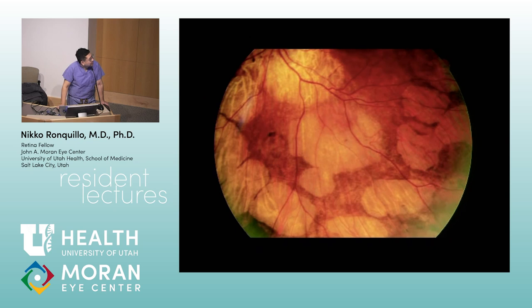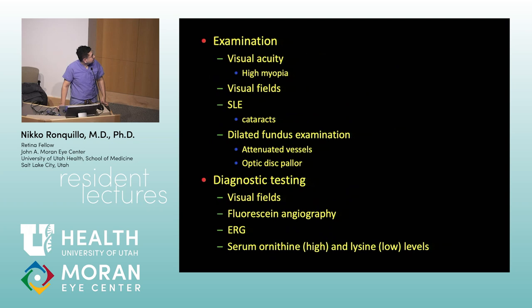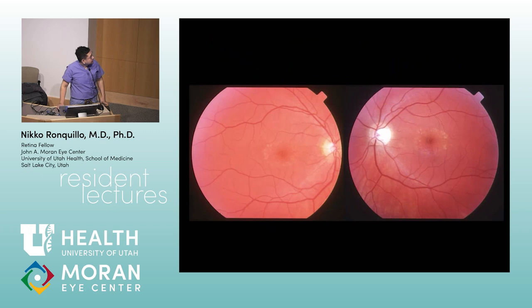Next — gyrate atrophy. Ornithine levels are elevated. Enzyme defect: ornithine aminotransferase (OAT). Treatment: vitamin B6 supplements and arginine-restricted diet. Autosomal recessive inheritance.